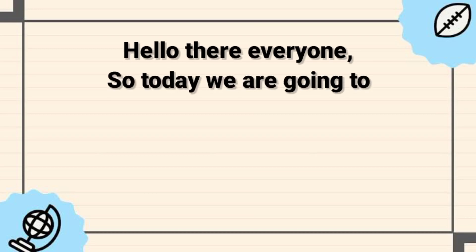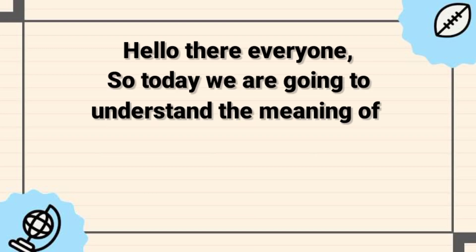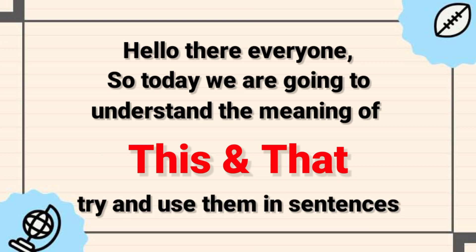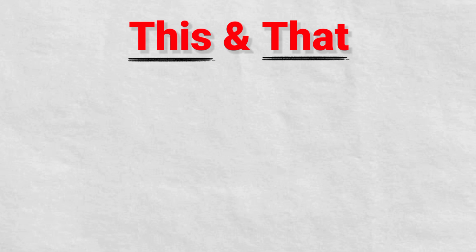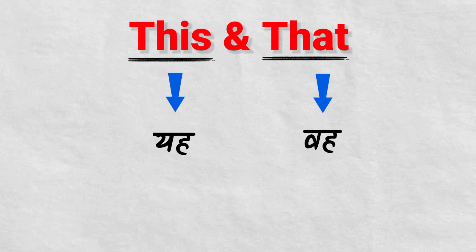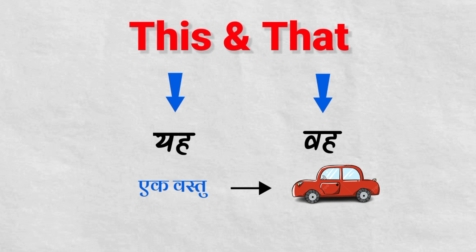Hello there everyone. Today we are going to understand the meaning of 'this' and 'that' and try to use them in our sentences. Aaj hum 'this' aur 'that' ka meaning samjhenge aur unka prayog kaise kiya jata hai ek sentence mein usko samjhenge. 'This' means yaha (here/nearby), 'that' means woha (there/far). Hameh humesha yaad rakhna hai ki jab bhi hum 'this' or 'that' ka use karte hai, hum humesha ek vastu ke baare mein baat karte hote hai. Whenever we use 'this' and 'that', we are always talking about a singular noun.